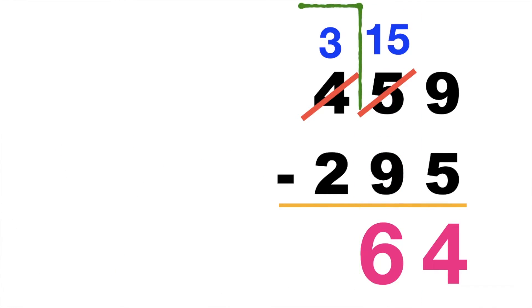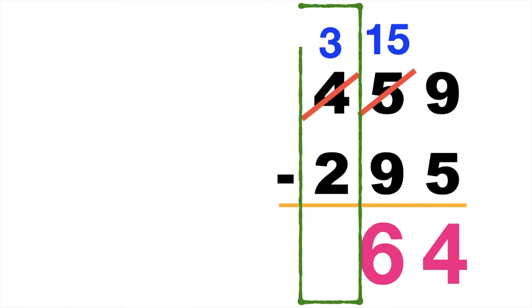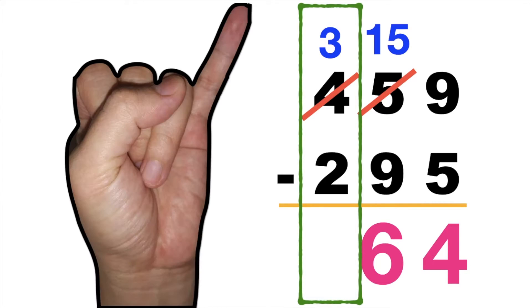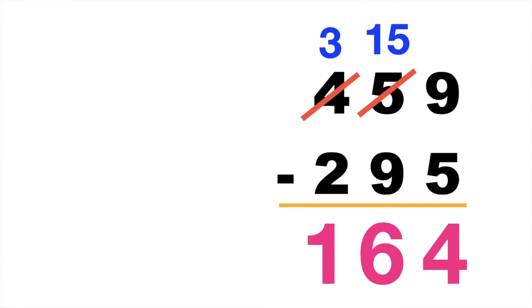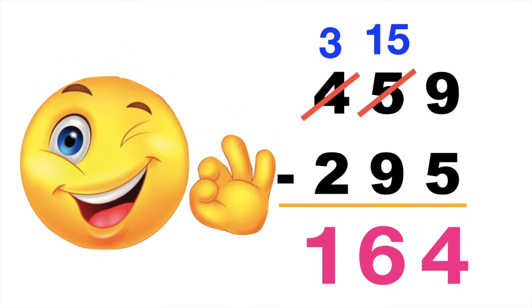Let's proceed to the hundreds place. 3 minus 2 — 2 on your mind: 2, 3. So 3 minus 2 is equal to 1. So the difference is 164.